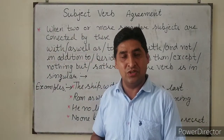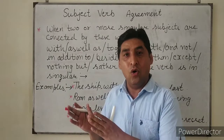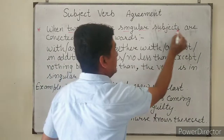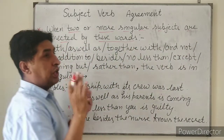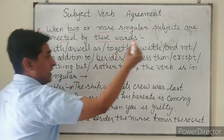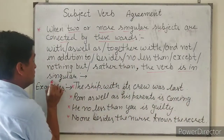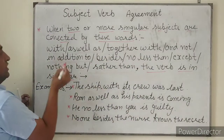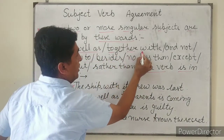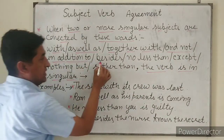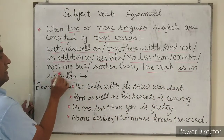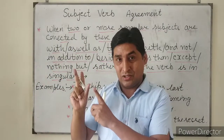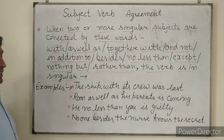Hello students, welcome to the class. Today we will discuss some more rules of subject-verb agreement. When two or more subjects are connected by words like 'as well as,' 'together with,' 'and not,' 'in addition to,' 'besides,' 'no less than,' 'except,' 'nothing but,' 'rather than,' the verb is always in singular form — it agrees with the first subject.